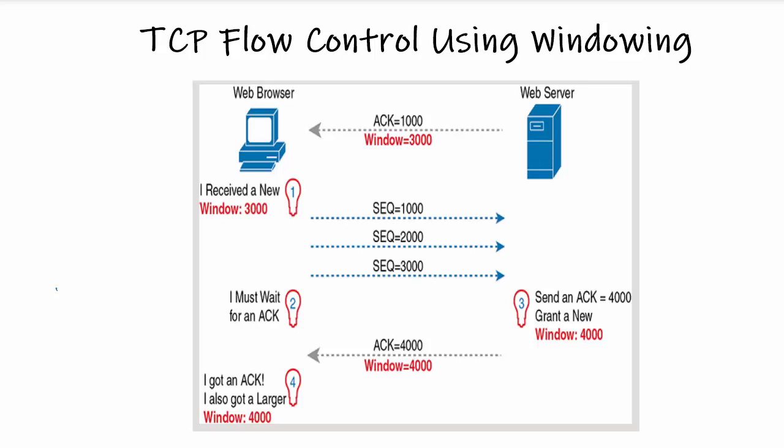Hello everyone, welcome to my channel J-Networks. In this video we'll look at the concept of flow control or windowing in TCP. TCP implements flow control by using a window concept that is applied to the amount of data that can be outstanding and awaiting acknowledgments at any one point in time. This window concept lets the receiving host tell the sender how much data it can receive right now, giving the receiving host a way to make the sending host slow down or speed up.